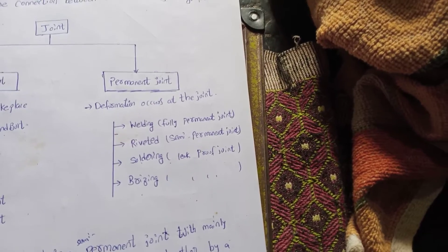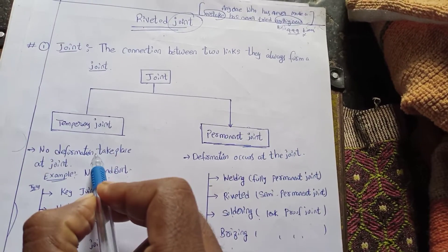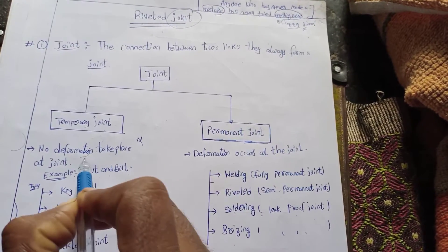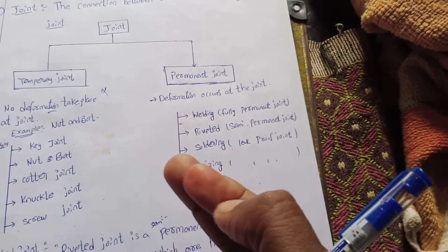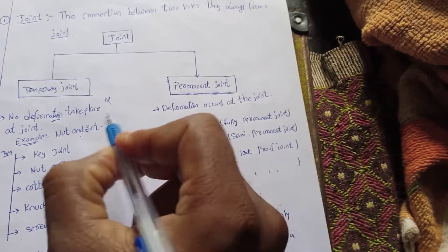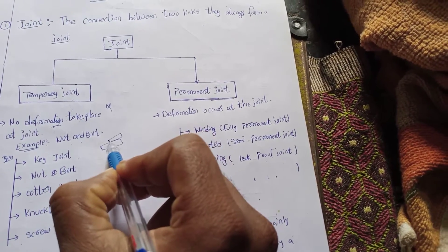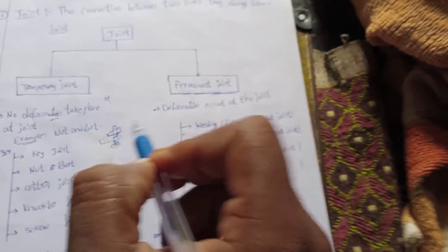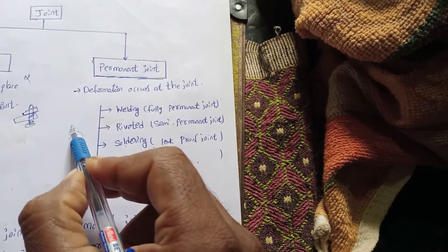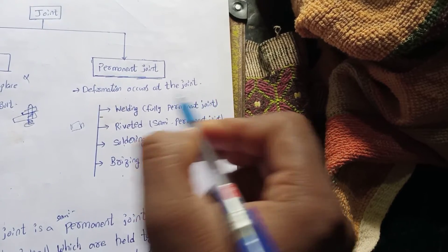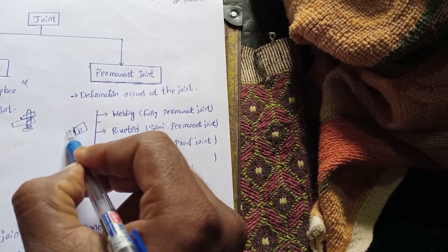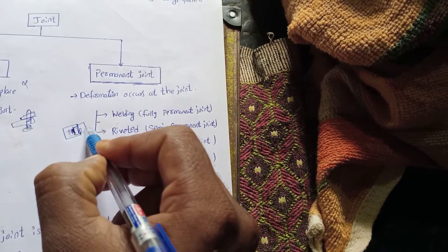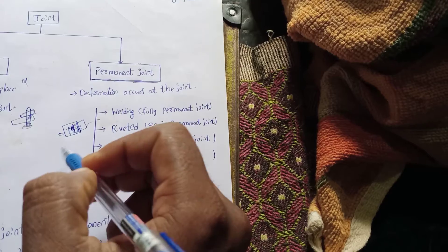In case of temperature changes in the joint, there is deformation. In temporary joints, there is not much deformation. But in case of permanent joints, the deformation remains. When you apply force, the deformation stays.